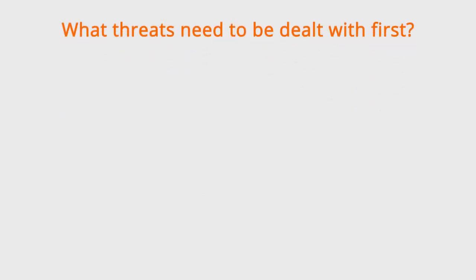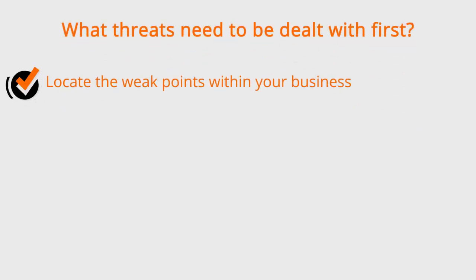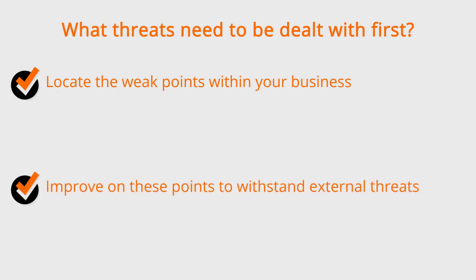What threats need to be dealt with first? It's important to look at the weak points within your business and improve upon them in order to cope with external threats. For example, the Shop and Carry company recognized that customers only use power stabilizers when power supply has low voltage and is unstable. When the power system improves, demand for its power stabilizers will decrease. The company therefore decided to invest in new products like power cables that are suitable with customers' demands even when the power system is stable.